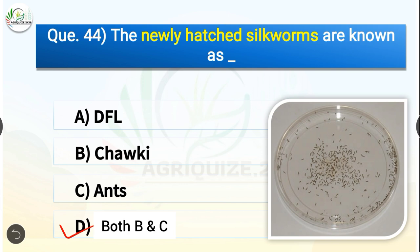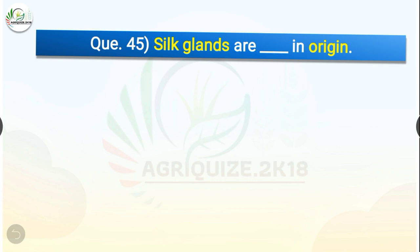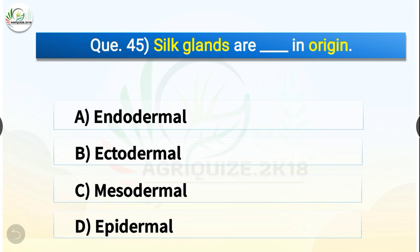Question number forty-five: Silk glands are dash in origin. The options are endodermal, ectodermal, mesodermal, or epidermal. The correct answer is option B — ectodermal. The silk glands are ectodermal in origin.